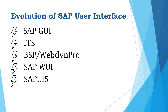Let's discuss the evolution of SAP user interface from the start to till date. Why did SAP not develop a web application and instead build its own GUI? Because SAP started in 1970, and during that time there was no browser. That is the reason SAP developed its own GUI.